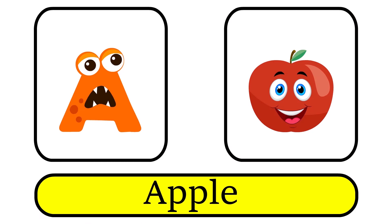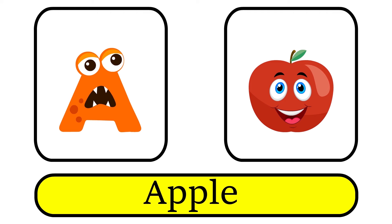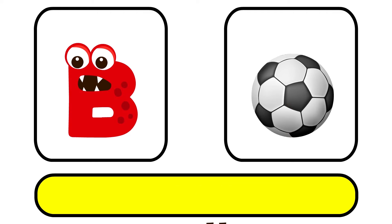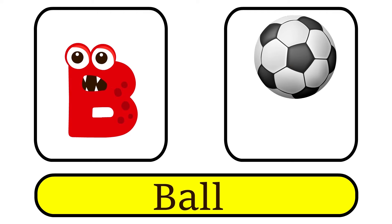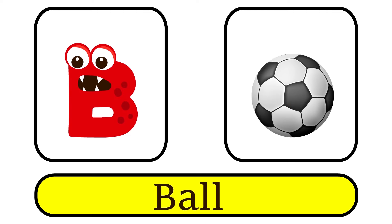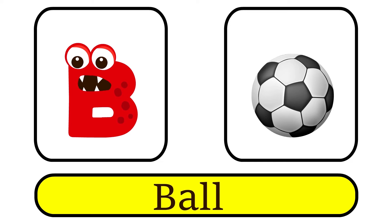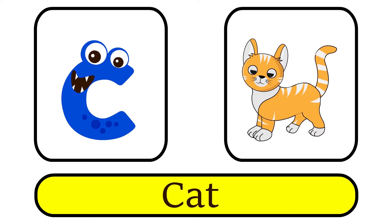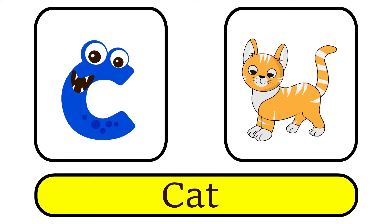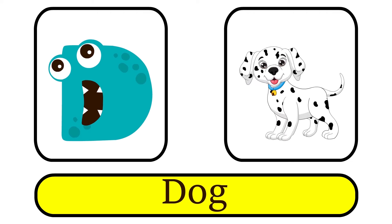A is for Apple. A, A. B is for Ball. B, B. C is for Cat. K, K. D is for Dog. D, D.